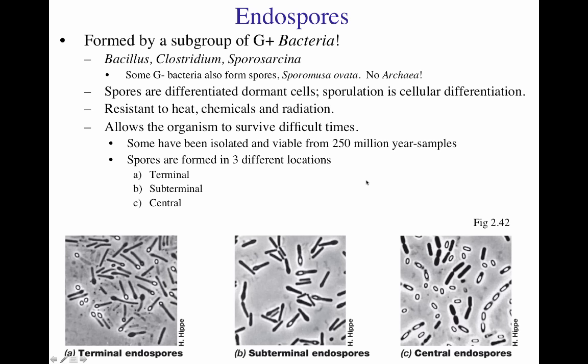Sporulating bacteria can generate spores in three different locations, which is genetically encoded. Some bacteria are terminal spore-forming bacteria, where the spore is formed at the end of the microorganism. Others are called subterminal, because the spore is formed almost at the end but not quite. The last type are the central sporulators, where the spore is formed right in the middle. We can differentiate sporulating gram-positive bacteria by whether they form the spore in the terminal, subterminal, or central position.